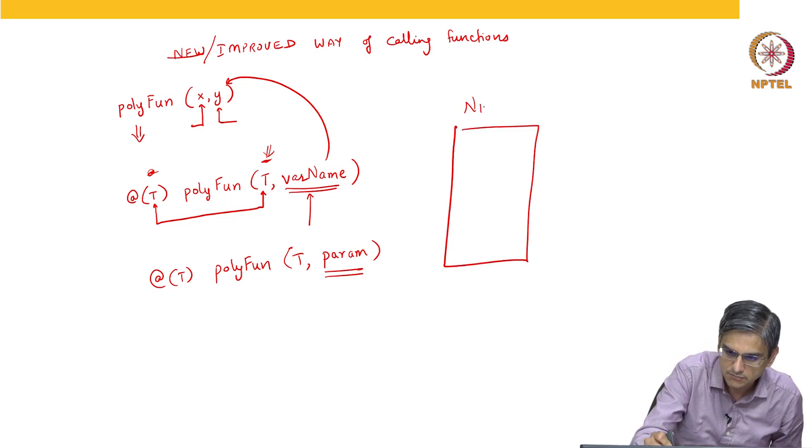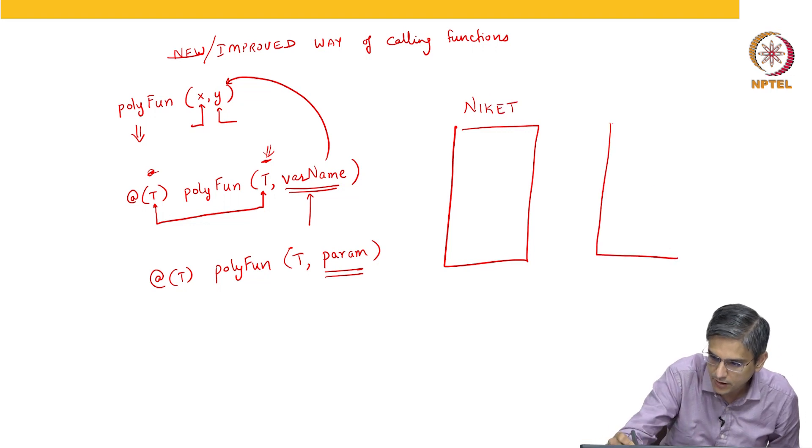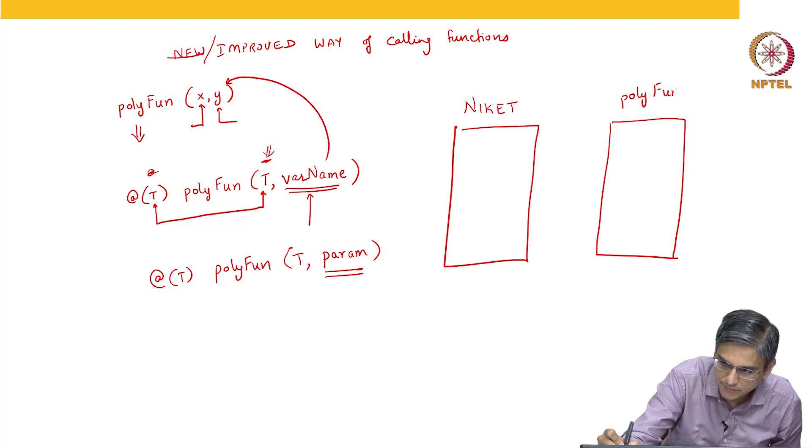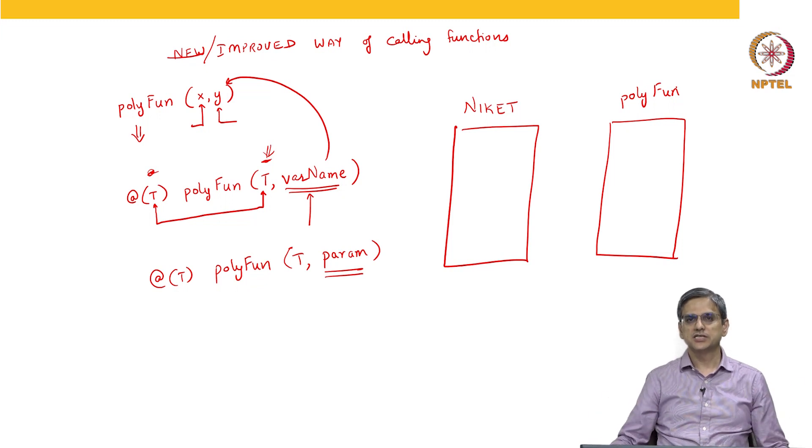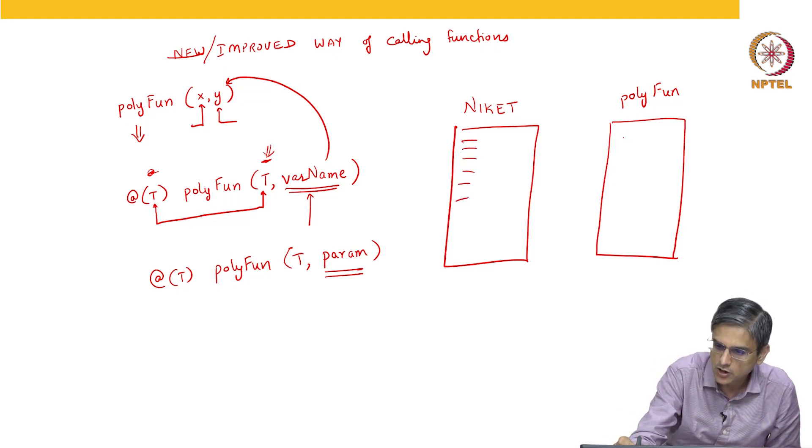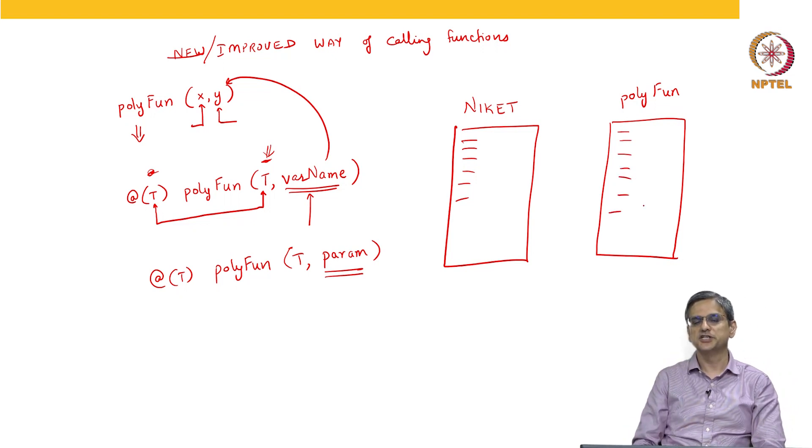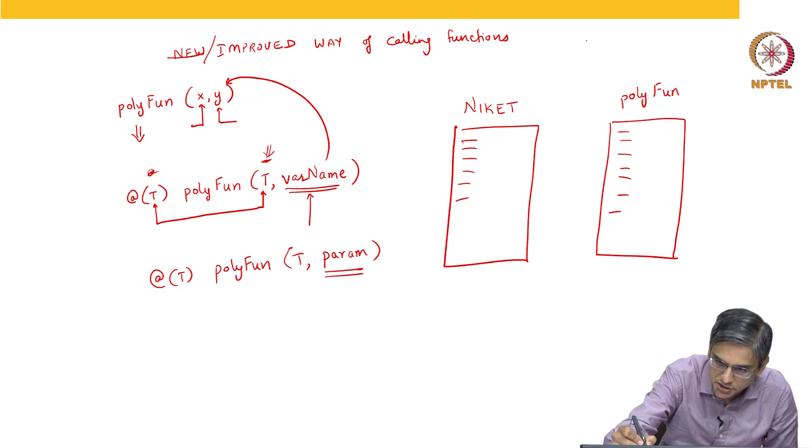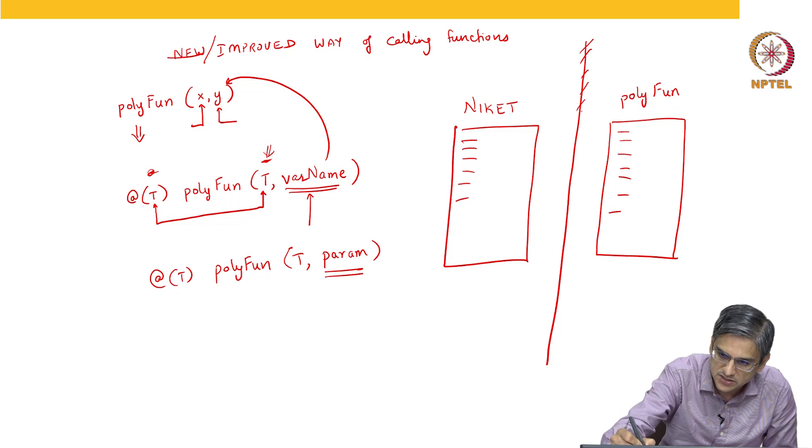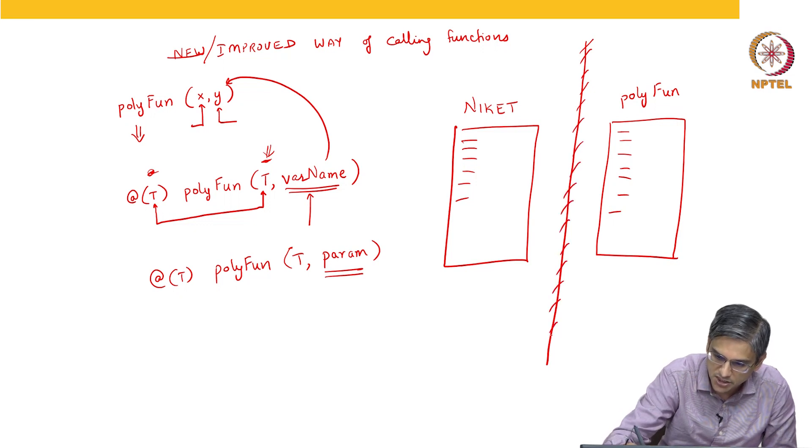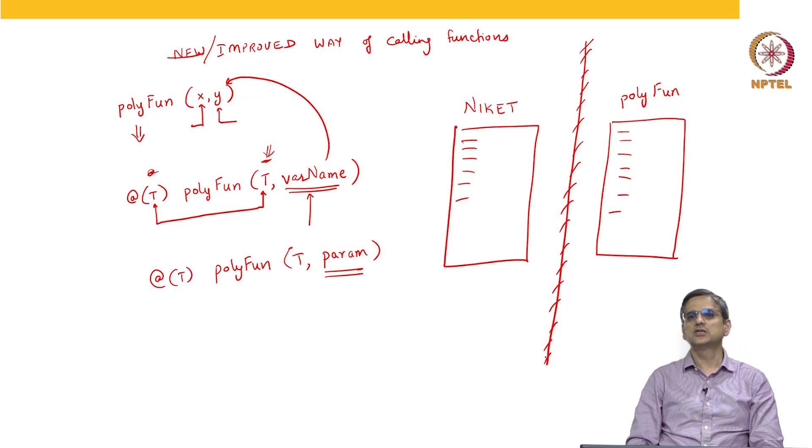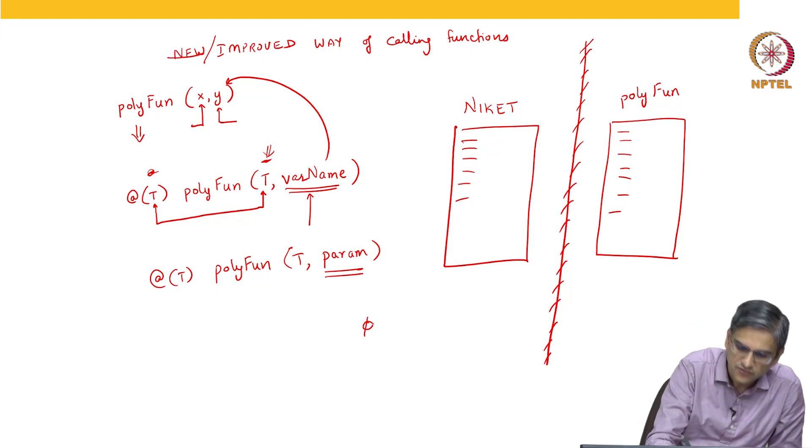This is Niketh, that is me. This is my friend polyfun. Our teacher has given us certain assignments. A teacher has given me one assignment, teacher has given my friend polyfun another assignment. I have a certain set of instructions that I need to follow, polyfun has certain set of instructions that he or she needs to follow. Now we have been instructed that I cannot show my set of instructions or my worksheet to polyfun, polyfun cannot show his or her worksheet to me. So we have created a wall between the two of us. I cannot see what polyfun is doing, polyfun cannot see what I am doing. Now I want certain information from polyfun. I want phi from polyfun. I do not know how polyfun is going to give me that phi, but I want the value phi from polyfun.